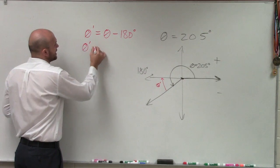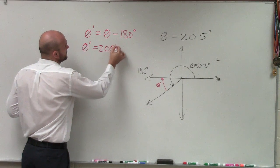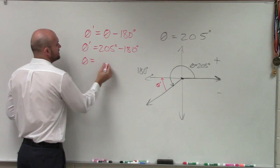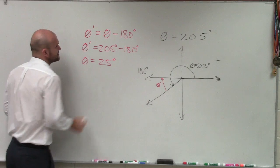So theta prime equals 205 degrees minus 180 degrees. So theta prime equals 25 degrees.